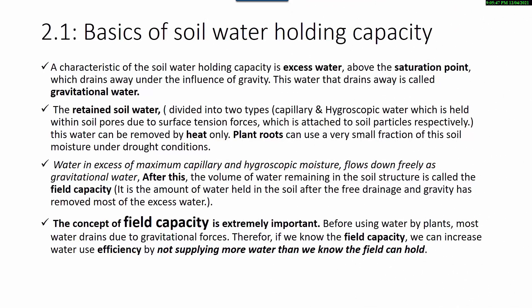Basics of soil water holding capacity. A characteristic of soil water holding capacity is that excess water above the saturation point drains away under the influence of gravity. This water that drains away is called gravitational water. The retained soil water is divided into two types: capillary and hygroscopic water, which is held within soil pores due to surface tension forces.